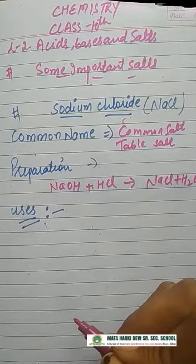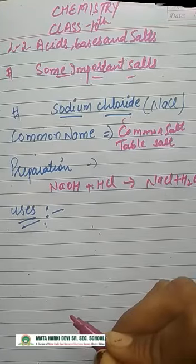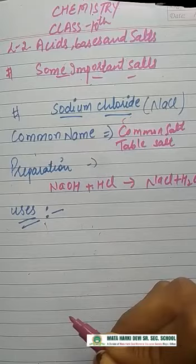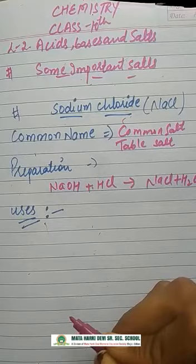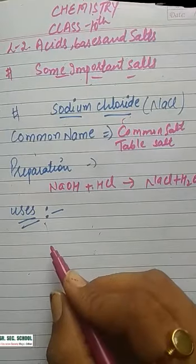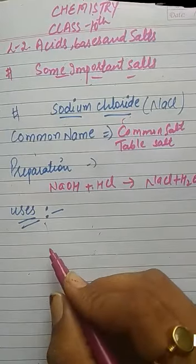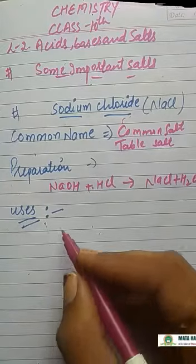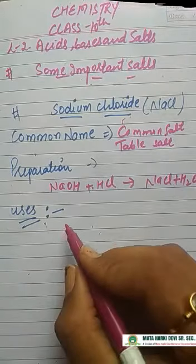NaCl is also obtained by the evaporation of seawater, because seawater contains sodium chloride. Seawater is salty, and that salty nature is because of the presence of salt. We obtain salt by the evaporation of seawater.